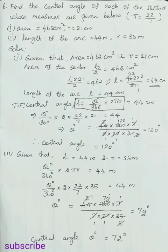Now, arc length equals area of the sector, so: theta divided by 360 degrees times 2 pi r equals l. We found l equals 44 centimeters. Substituting: theta divided by 360 degrees times 2 times 22/7 times 21 equals 44. Simplifying: theta equals 44 times 360 degrees times 7 divided by 2 times 22 times 21, which gives theta equal to 120 degrees.